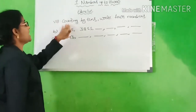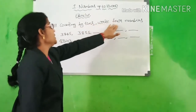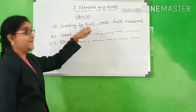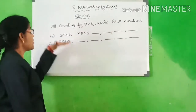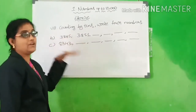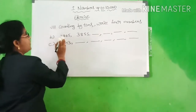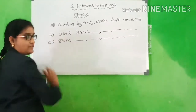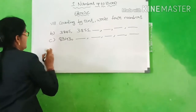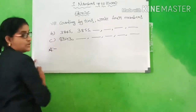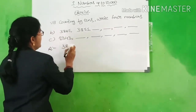8th bit: counting by 10s, write 4 numbers. Now you have to check the question. What is this number? 3,845. You have to count the answer. Look at the board, all of you. 3,845.